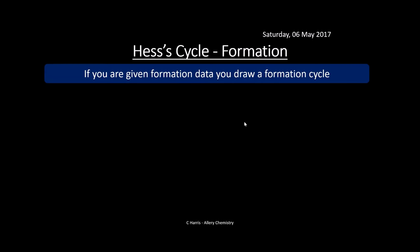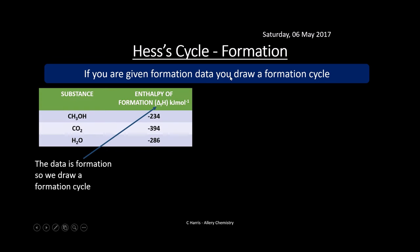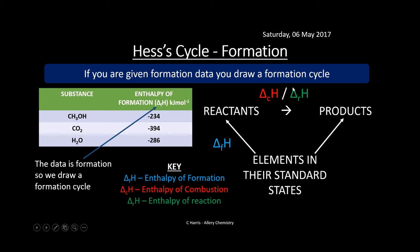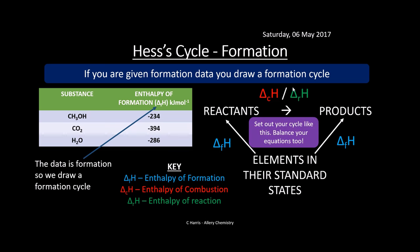There are two cycles: a formation cycle and a combustion cycle. What you're looking for is the data they've given you — if it's formation data, you use a formation cycle. The cycle has reactants and products at the top, and elements in their standard states at the bottom. The arrows point upward from the elements to the reactants and products — this is the enthalpy of formation, delta-f-H. Make sure everything is balanced.